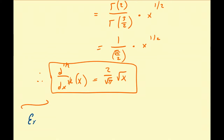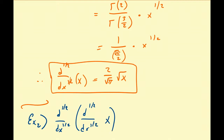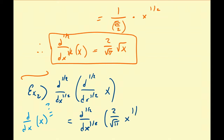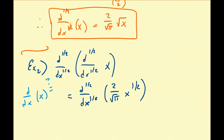As another example, let us consider the one-half derivative of the one-half derivative of x. You may be wondering whether this is really equal to the full derivative of x. This is going to be equal to the half derivative of our previous answer: 2 divided by the square root of pi times x to the one-half. Since 2 over square root of pi is a constant, we can factor that out, giving us 2 divided by the square root of pi times the half derivative of x to the one-half.